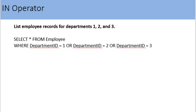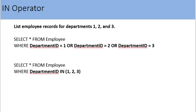Look at this example query — it gets records for departments 1, 2, and 3. The first query uses three OR conditions: SELECT * FROM employee WHERE department_id = 1 OR department_id = 2 OR department_id = 3. The second query uses the IN operator: SELECT * FROM employee WHERE department_id IN (1, 2, 3). Both queries produce the same result, but the second is shorter and easier to understand.